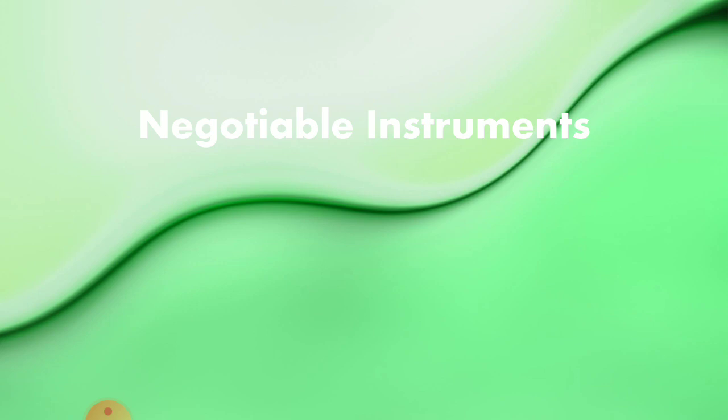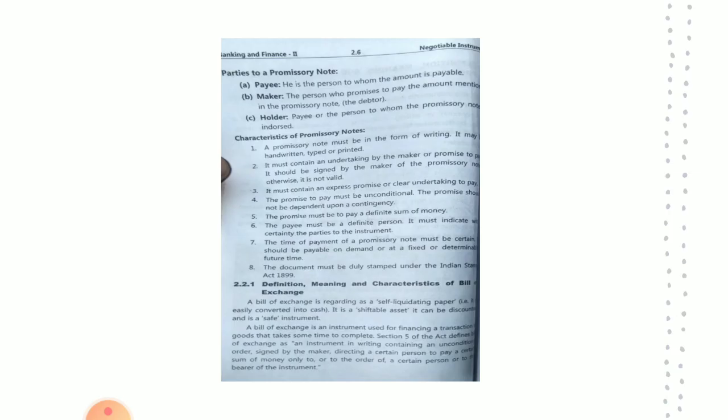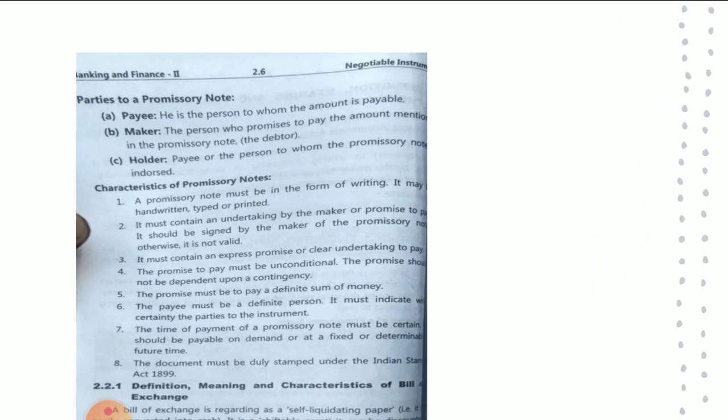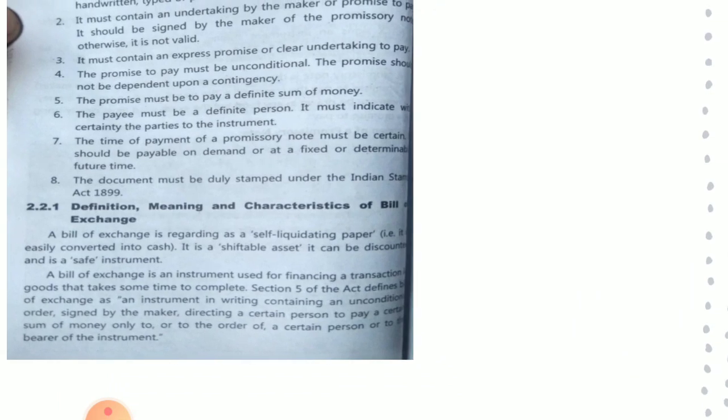A bill of exchange is regarded as a self-liquidating paper. This negotiable instrument — the bill of exchange — is a self-liquidating paper. If you want to convert it into cash, you can easily do it. That's why it is known as a self-liquidating paper — it can be converted into cash easily.